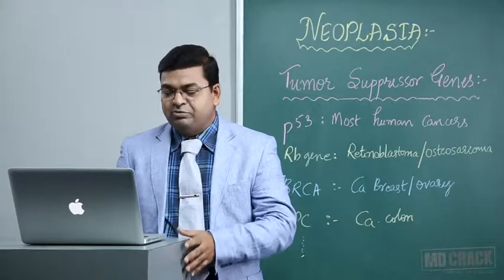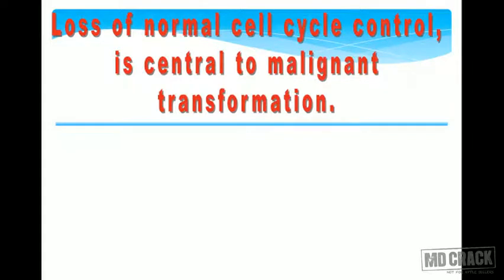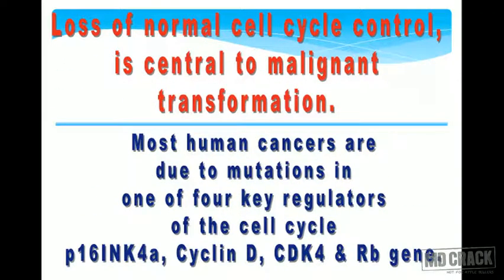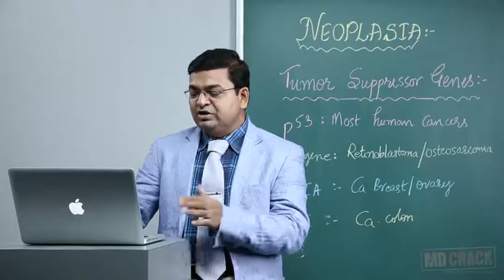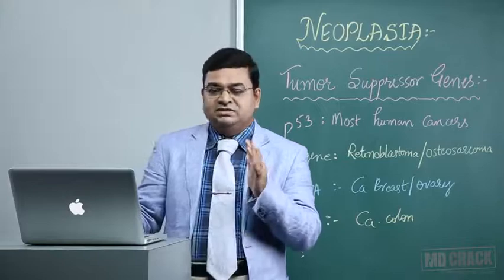Familial retinoblastoma cases are not only prone for retinoblastoma but also for osteosarcomas and various soft tissue sarcomas. Inactivation of RB genes is also noted in adenocarcinoma of the breast, small cell carcinoma of the lung, and bladder carcinomas. Loss of normal cell cycle control is the main central point for development of malignancies. Most human cancers are due to mutations in key regulatory molecules of the cell cycle — mainly p16 INK4A, cyclin D, CDK4, or the retinoblastoma gene.